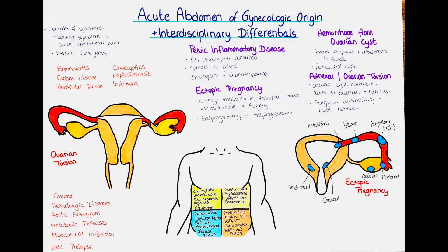The localization of the pain can give us an indication of where the underlying etiology might come from. If you want to know more about acute abdominal pain, you can see our video on acute abdominal pain in children, where we discuss different causes that can also affect adults. Now I would like to switch over to acute abdomen of gynecological origin and talk more specifically about those diseases and how we diagnose and treat them.